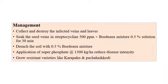Coming to the management aspects: collect and destroy the infected vines and leaves, and soak the seed vines with streptocycline 500 ppm and Bordeaux mixture 0.5% solution for 30 minutes. Soil drenching with 0.5% Bordeaux mixture and application of superphosphate at the rate of 1500 kg per acre can reduce the incidence of the disease. Growing resistant varieties like Karpaka and Pachahai Kodi are also recommended.